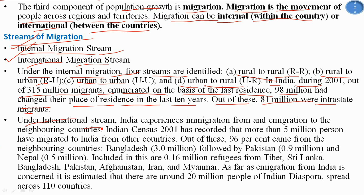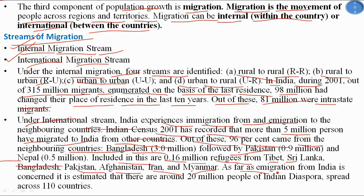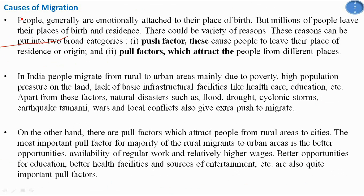Under the international stream, the Indian Census 2001 recorded that more than 5 million persons migrated to India from other countries, of which 96% came from neighboring countries such as Bangladesh, Pakistan, and Nepal. Additionally, there are 0.16 million refugees from Tibet, Sri Lanka, Bangladesh, Pakistan, Afghanistan, Iran, and Myanmar. As for emigration from India, an estimated 20 million people of the Indian diaspora are spread across 110 countries.